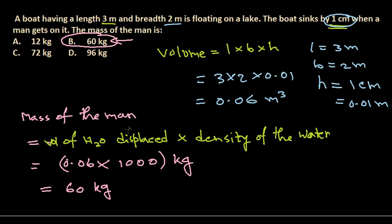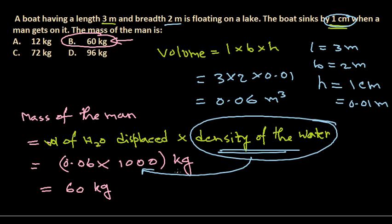So option B should be the correct answer. It found to be very much difficult, but you need to know this formula - that is volume of water displaced into the density of water, and the density of water is found to be thousand in this case. And that's how you get this answer correctly. That's it guys, and I hope that's helpful. Thank you.